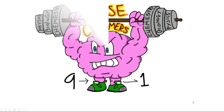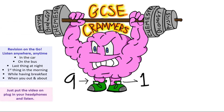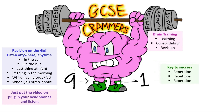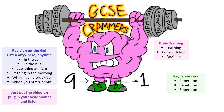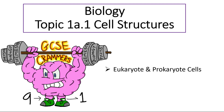Hi, this is GCSE 9 to 1 Crammers. It's never too late to start revising and this way you can do it anywhere. Listen to these questions as many times as you need until the answers pop into your head. Today we're revising biology topic 1a.1 cell structures, covering eukaryote and prokaryote cells, cell structures and functions.